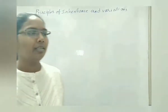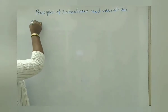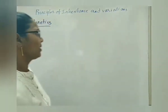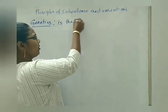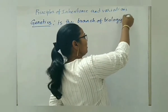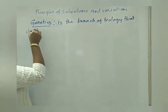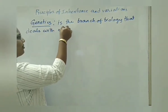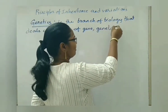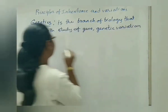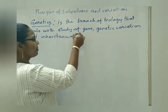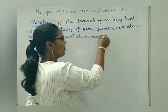In this chapter, we start with a few important terms. First, what is meant by genetics? Because this complete chapter and molecular basis of inheritance, we study under the heading genetics. Genetics is the branch of biology that deals with the study of genes, genetic variations, and inheritance of characters from parents to offsprings.